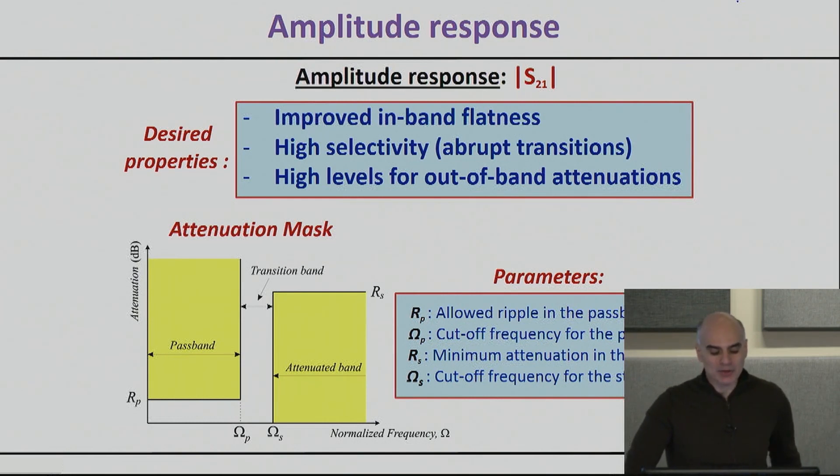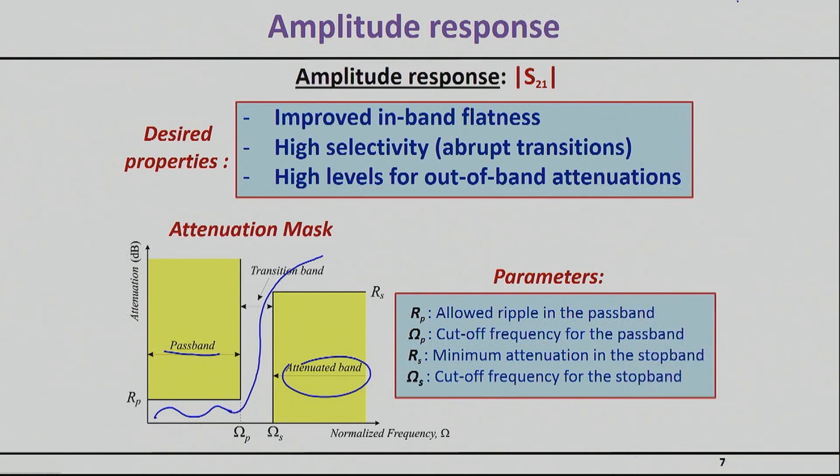And so the amplitude response typically will be specified by essentially dividing our frequency bands to a passband where you can see here, where essentially our main goal is to restrict the variation of my S21 to within some type of a limit. And then there's going to be the attenuation band where essentially is the band where my S21 must actually be below a threshold, so 40 dB, 50 dB depending on what the case might be. And finally there's a transition band where we allow basically the filter transition from its typical passband to its typical stopband behavior.